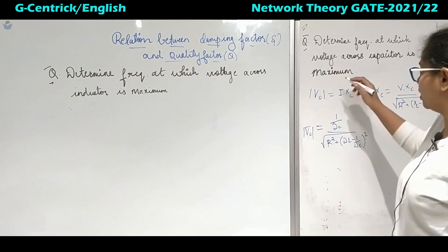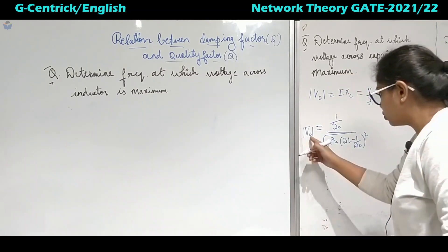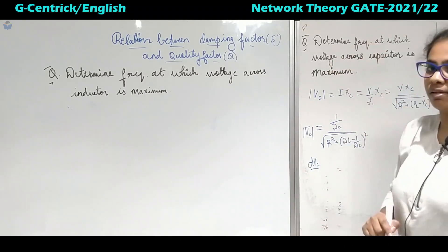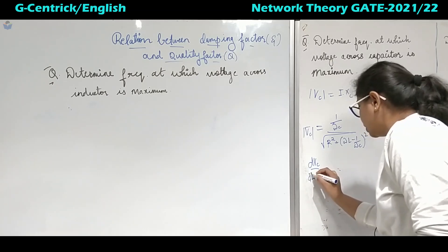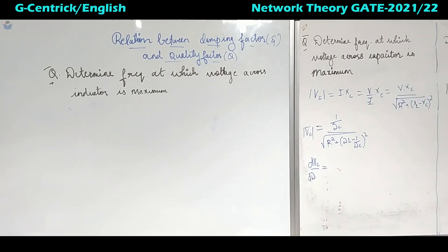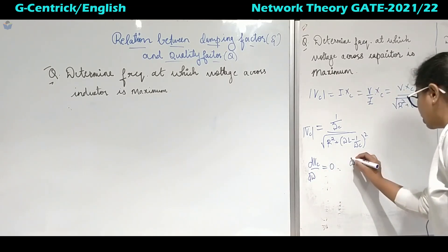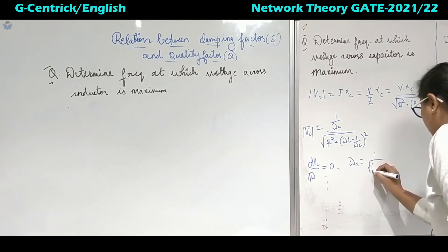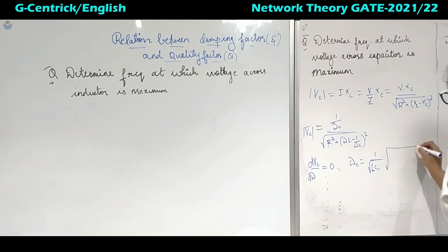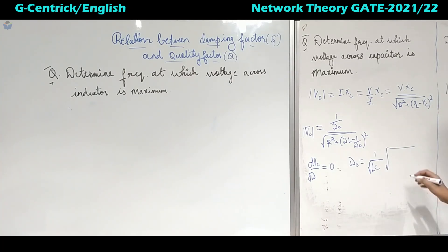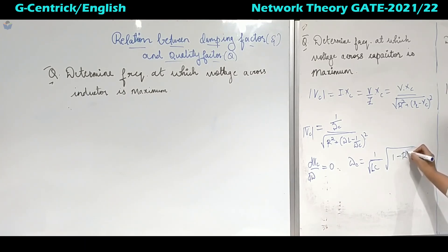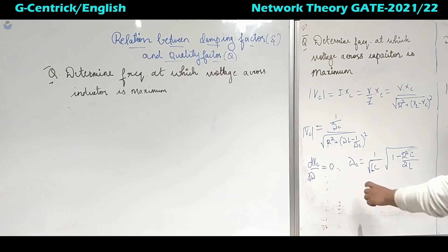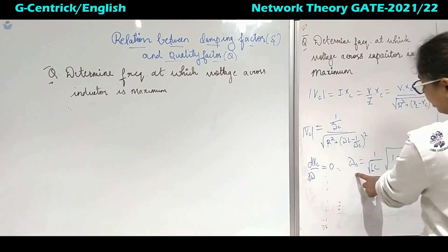To get the maximum value of voltage across the capacitor, we differentiate this with respect to omega and equate it to zero. When you solve this, you get omega C as 1 by root LC, under root of (1 minus R squared C divided by 2 times L). This is the answer when you differentiate with respect to omega.